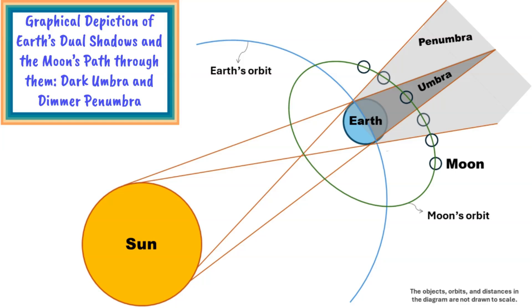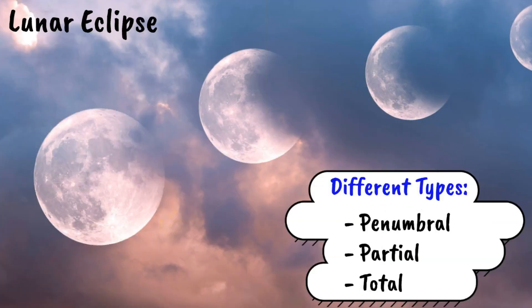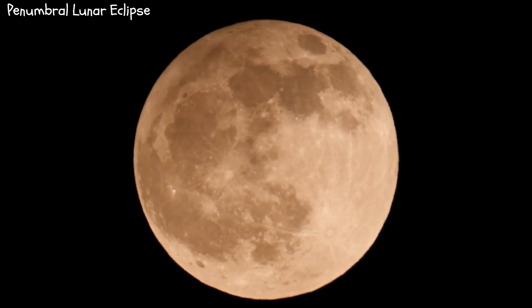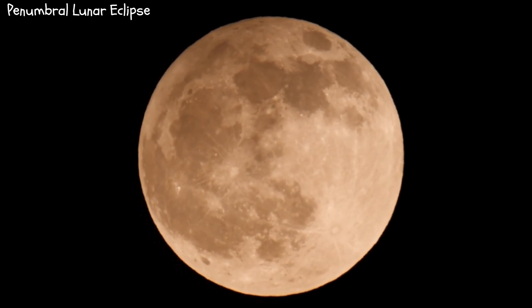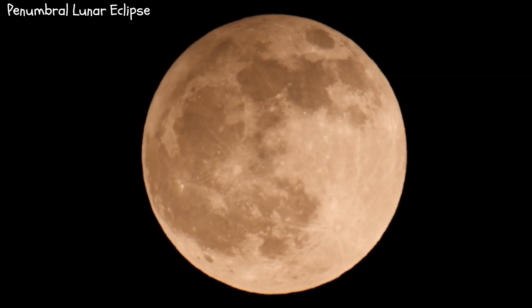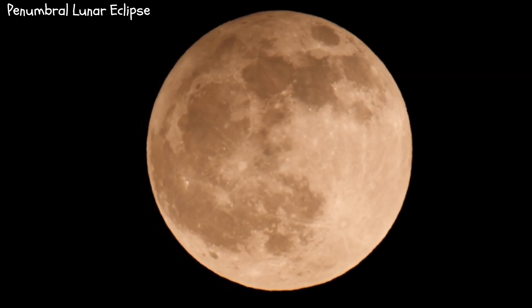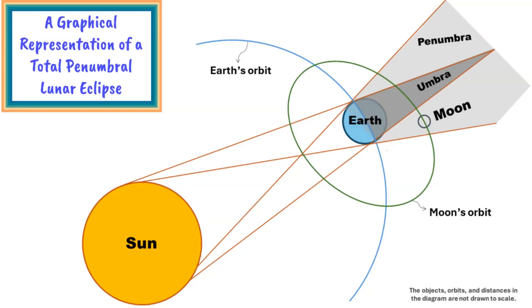This journey provides a captivating insight into the celestial dynamics of lunar eclipses. The Moon's interaction with the Earth's shadows results in various types of lunar eclipses, including penumbral, partial, and total. Each type presents a unique spectacle in the night sky. A penumbral lunar eclipse occurs when the Moon traverses through the Earth's penumbra, the dimmer outer portion of its shadow. During this event, the Moon remains untouched by the Earth's umbra. A total penumbral lunar eclipse, a relatively rare phenomenon, happens when the Moon is entirely enveloped by the Earth's penumbra.